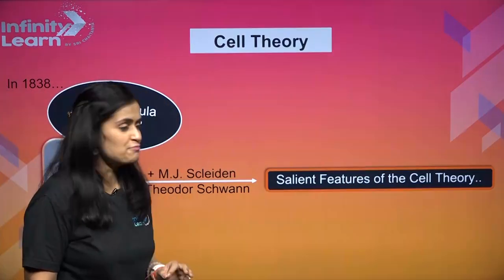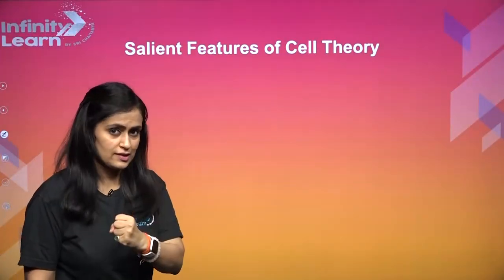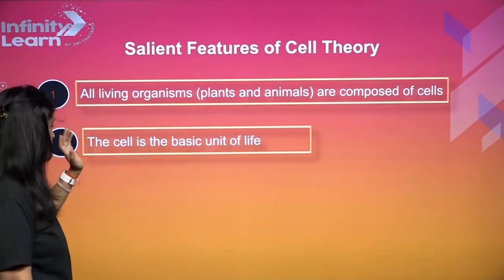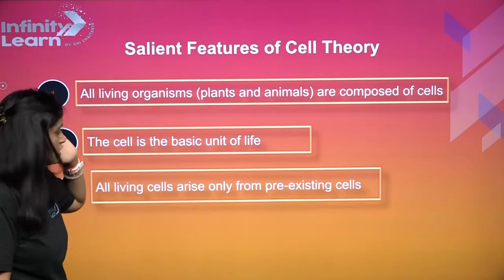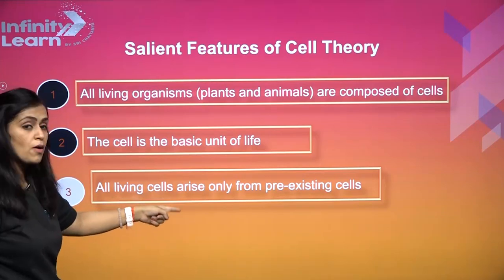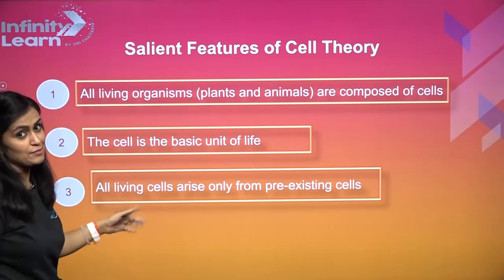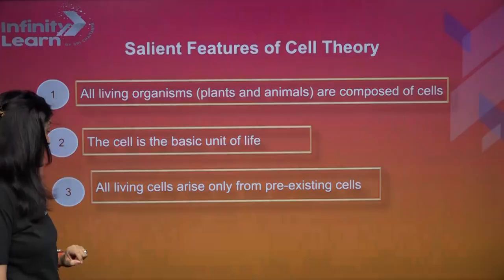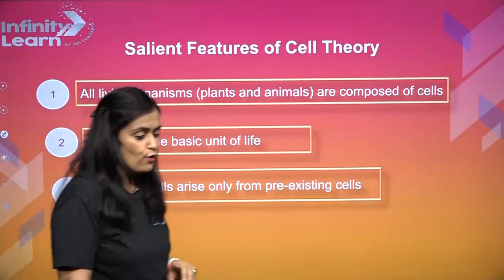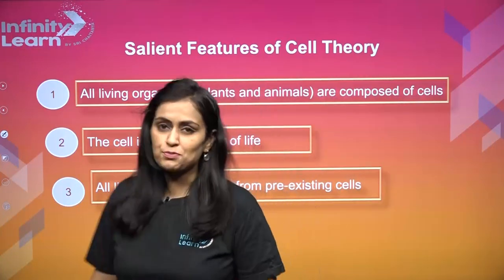Now Rudolf Virchow, M.J. Schleiden, and Theodor Schwann all came together and gave the salient features of cell theory - the cell theory was now complete. The salient features are: first, all living organisms are made of cells and the cell is the basic unit; third, all living cells arise from pre-existing cells - omnis cellula e cellula. One more addition: viruses do not follow cell theory - viruses are quite different. That's how the cell theory was proposed.